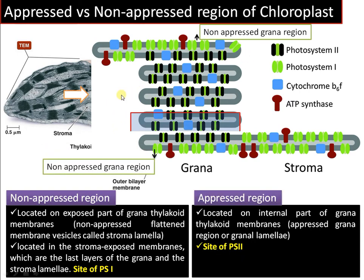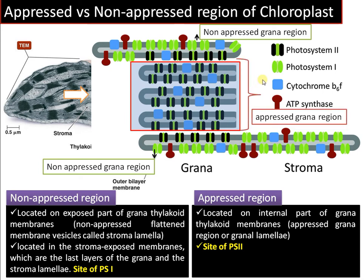The appressed region is the region that is internal to the granum — the thylakoid membranes stacked one above the other — and it is called the appressed region, or the internal part of the granum. This is the site of Photosystem II, as you can see highlighted here.